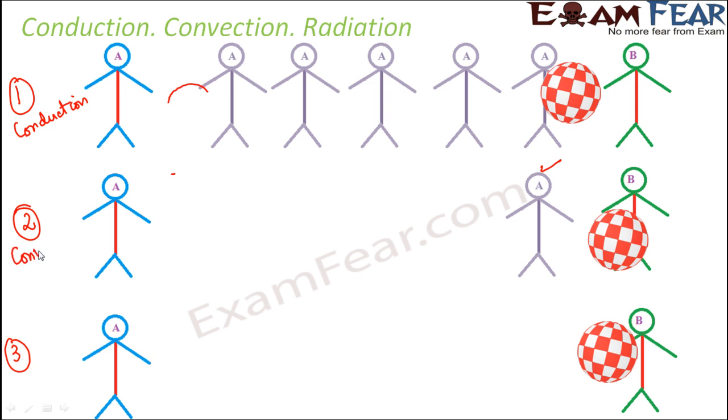What happens in convection? In convection, you really do not need that substance to be a solid. But you still need some medium, some particles of the medium. And here in convection, there is actual movement of the particles of the medium. So you see actual movement of this particular boy. That is convection.